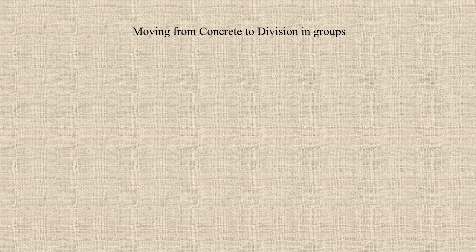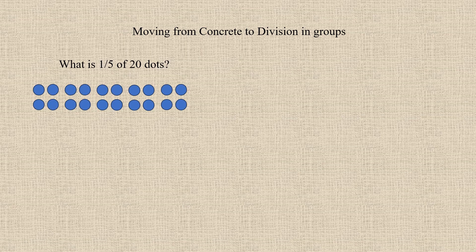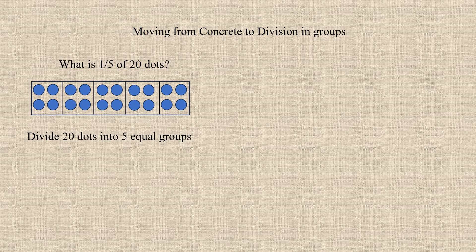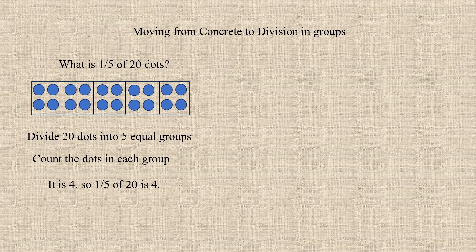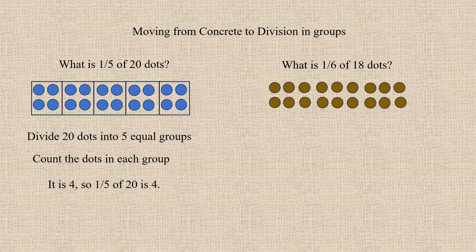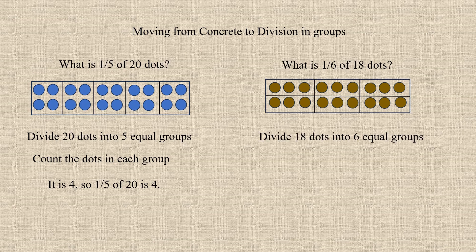Moving from concrete to division in groups: what is 1/5 of 20 dots? Here are 20 dots. Since it is 1/5, divide the 20 dots into 5 equal groups. Count the dots in each group — it is 4. So 1/5 of 20 is 4. Take one more example: what is 1/6 of 18 dots? Here are 18 dots. Since it is 1/6, divide into 6 equal groups. Count the dots in each group — it is 3. So 1/6 of 18 is 3.